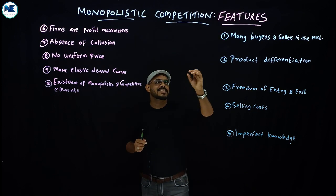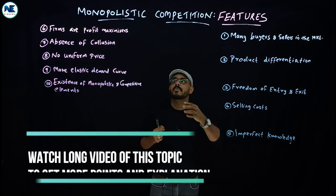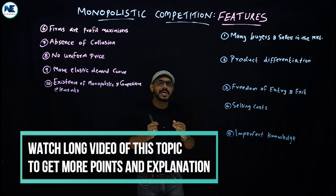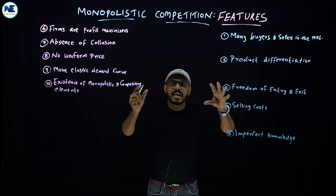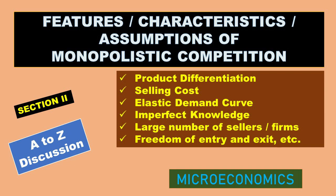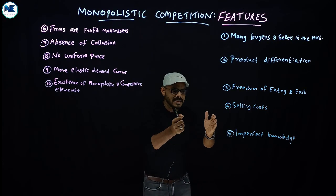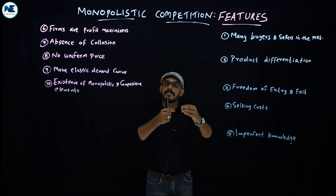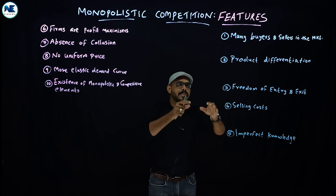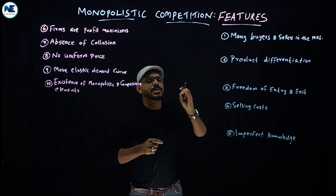Today's topic is the features, characteristics, or assumptions of monopolistic competition — another very interesting topic under microeconomics. We will cover 10 points associated with features of monopolistic competition. We know that monopolistic competition is the combination of monopoly and perfect competition, combining some features of each. We will discuss these 10 points one by one.